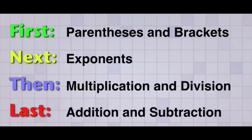In simplifying expressions involving order of operations, first we need to simplify the expressions inside the parentheses, brackets, or any grouping symbols. Next, we need to simplify the exponents. Then we need to multiply or divide from left to right. And lastly, we need to add and subtract from left to right as well.